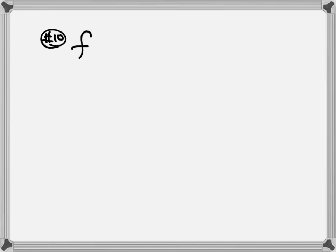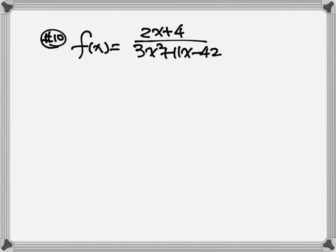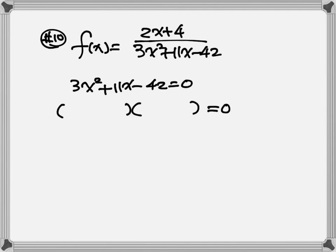Number 10. Here we have f of x equal to 2x plus 4 over 3x squared plus 11x minus 42. We're going to find the domain by setting the denominator 3x squared plus 11x minus 42 equal to zero. This is like chapter 5 — we're going to factor the trinomial. So we factor it as x plus 6 times 3x minus 7.